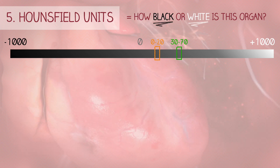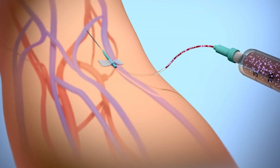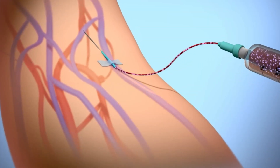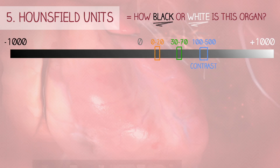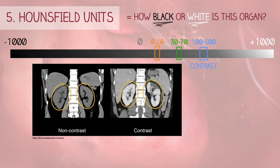In medical imaging, clarity is key, and that's where contrast agents come in. These substances contain iodine and are injected into a vein, usually in the arm. Iodine absorbs X-rays far more than surrounding tissues, which makes contrast-filled areas appear brighter and easier to distinguish. For example, here's an image of the kidneys with and without contrast — notice how the kidneys with contrast appear brighter. You may also notice that the upper part of the left kidney appears darker; this difference in enhancement is caused by reduced blood flow, a finding that would be missed without contrast.